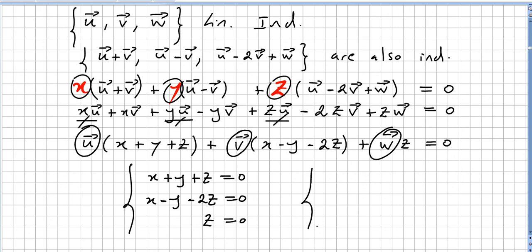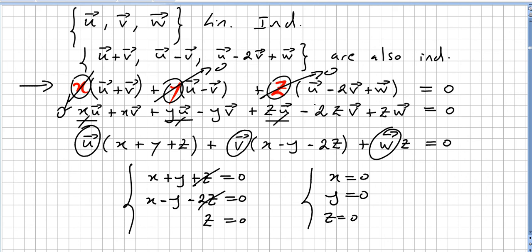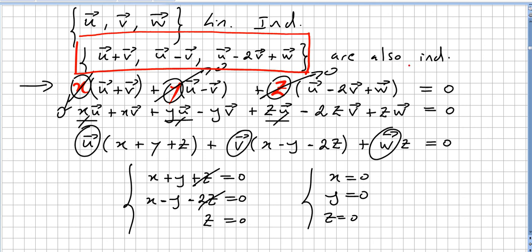If z = 0, then the first two equations become x + y = 0 and x − y = 0. The only way to add and subtract the same two numbers and get 0 is if they are both 0. So x = 0 and y = 0. Therefore the only solution is x = y = z = 0, which means this set is also linearly independent. A very important and widely used result.